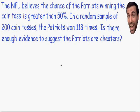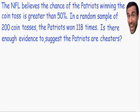Welcome to my third video on hypothesis testing. In this example we are dealing with proportions, and I thought it would be fun to make up an example using a football team that most of us come to love to hate, the New England Patriots. The NFL believes the chance of the Patriots winning the coin toss is greater than 50%. In a random sample of 200 coin tosses the Patriots have won 118 times. Is there enough evidence to suggest that the Patriots are cheaters?